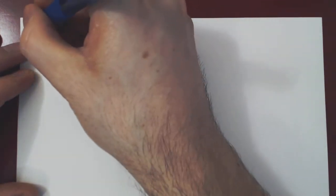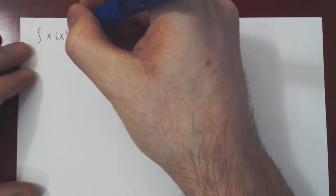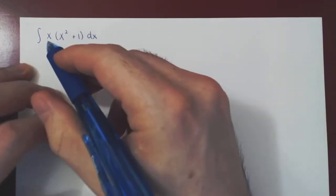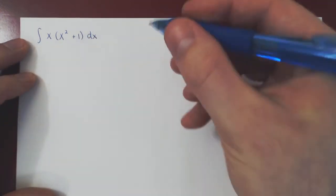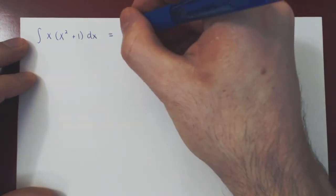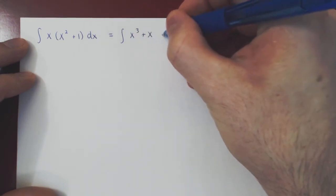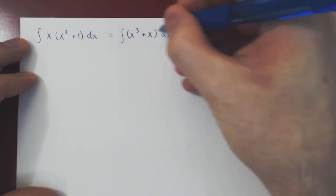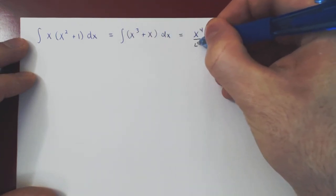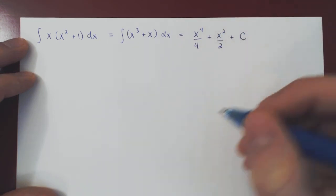Suppose we start very easily with the integral of x times x squared plus 1, dx. We are integrating over a product, so we have to multiply. This is the integral of x cubed plus x dx, and we can simply use the power rule in each term, which gives us x to the 4 over 4 plus x squared over 2 plus the arbitrary constant of integration.